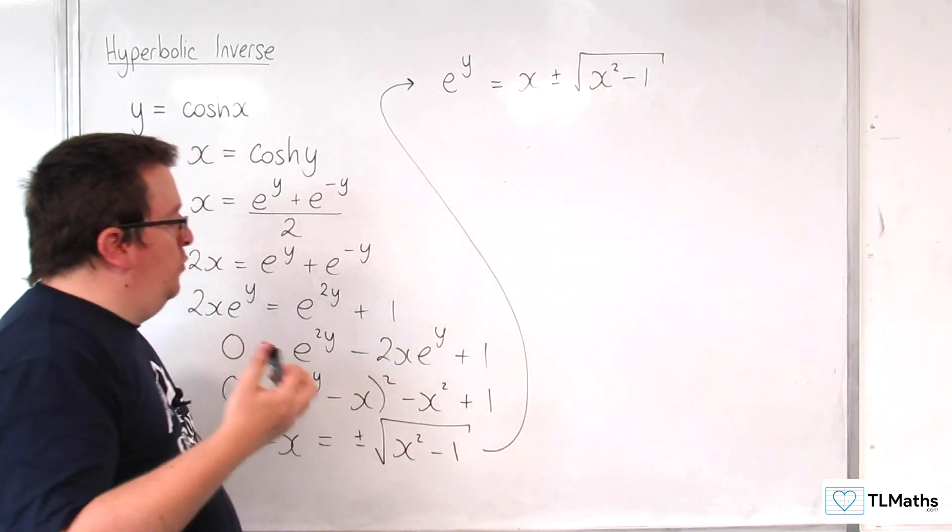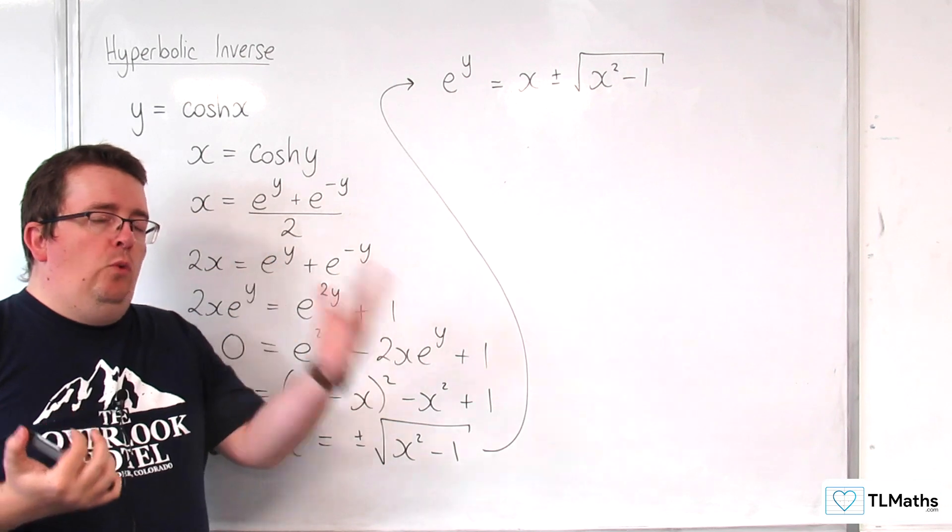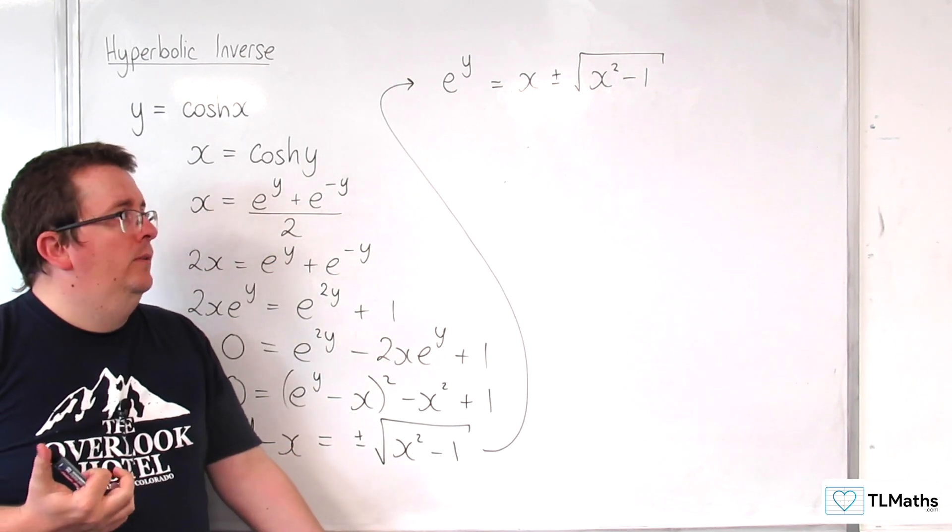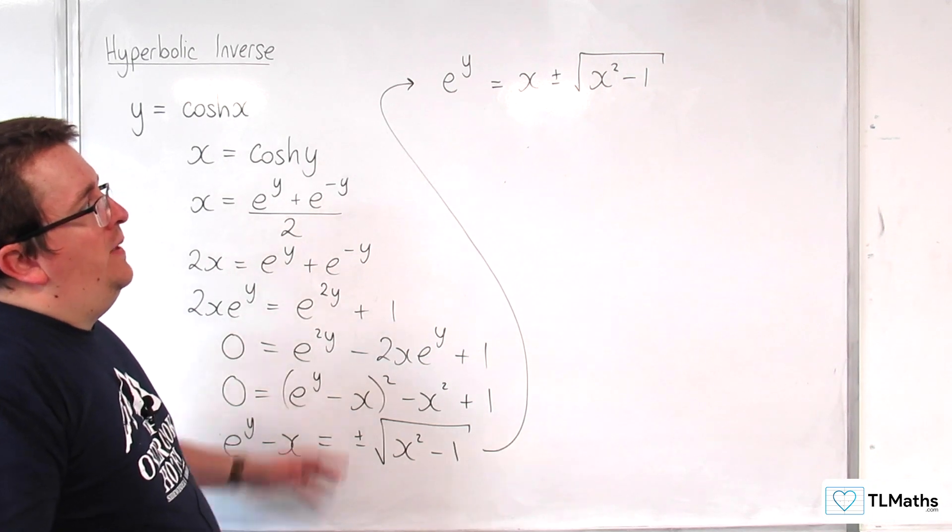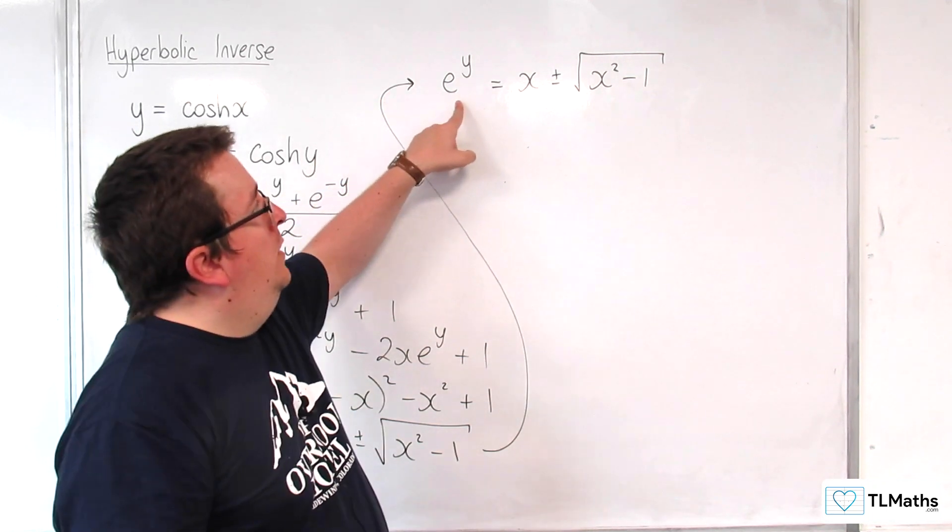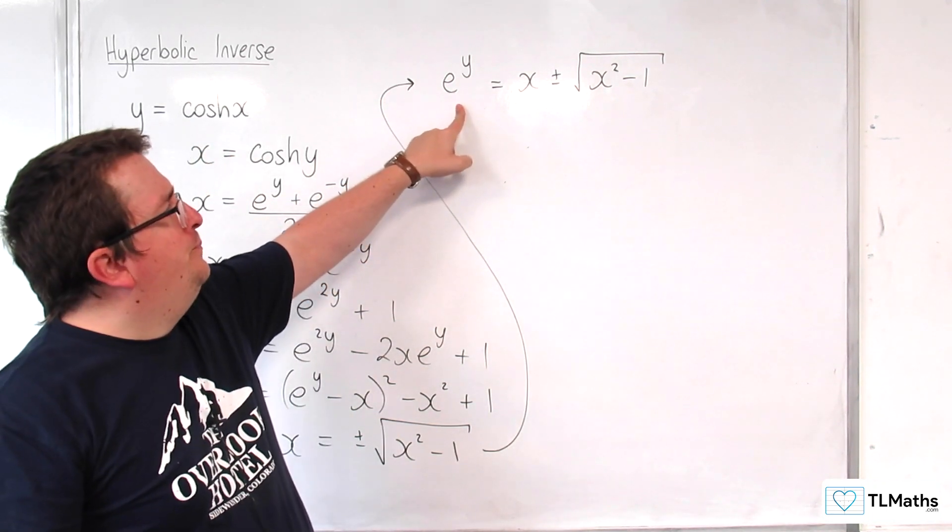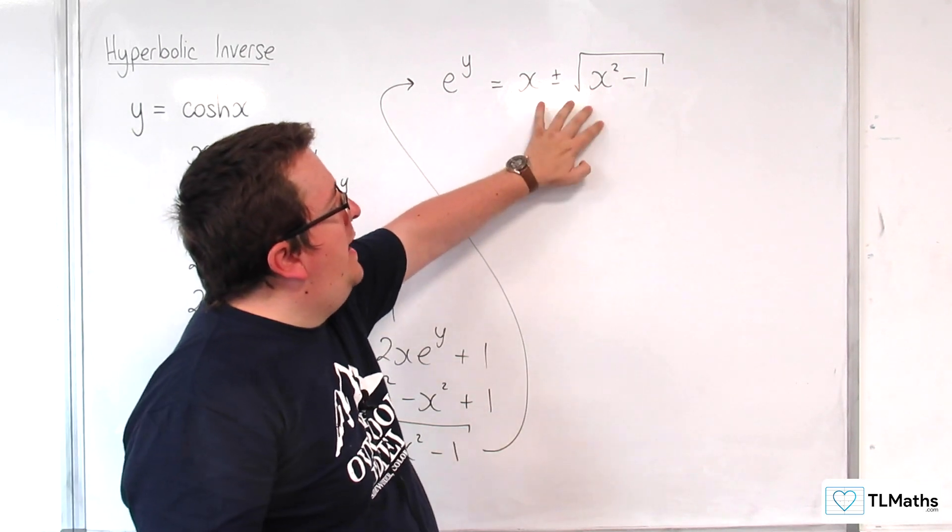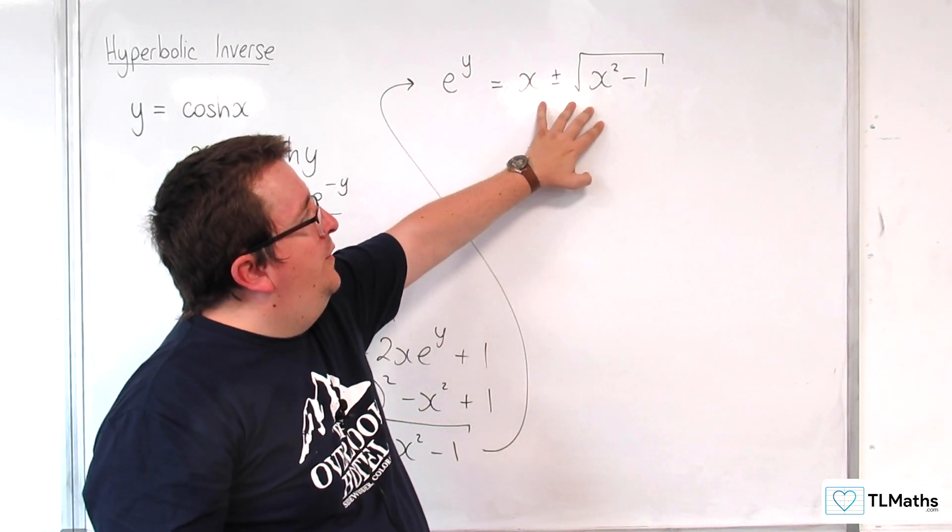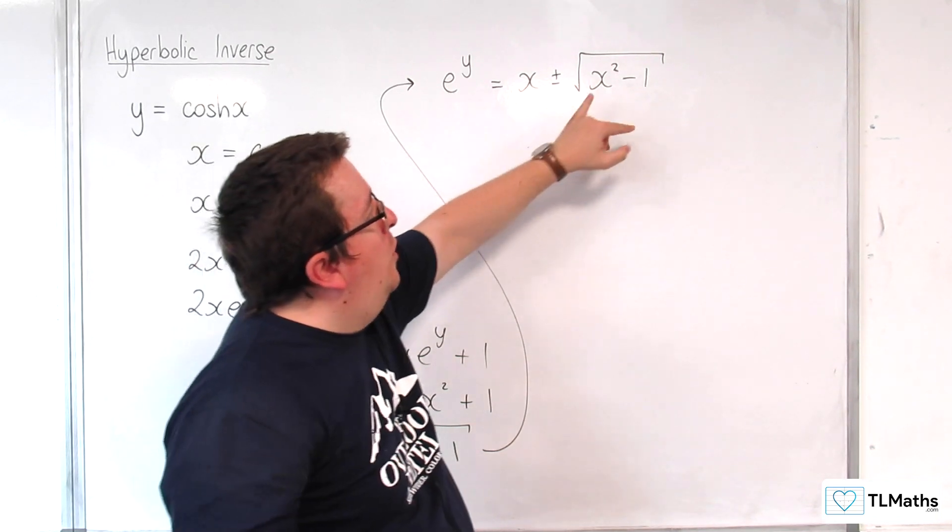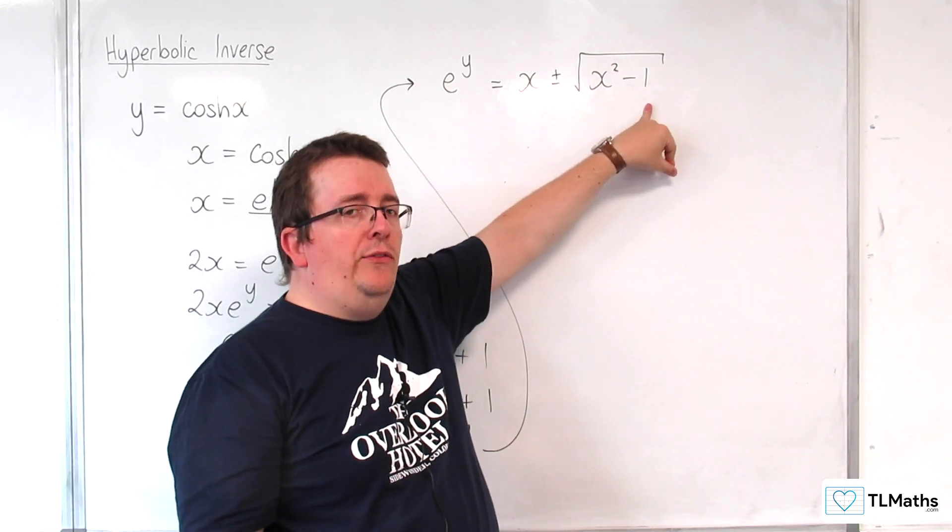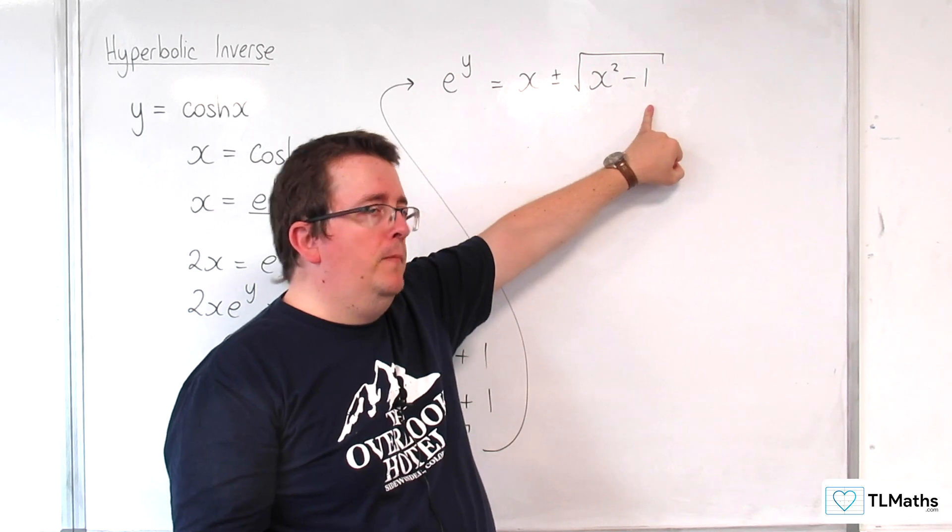Now, the argument that we had for y equals sinh of x, and finding its inverse, was that e to the y couldn't be negative. And what we had there was negative when we had the minus sign. But here we've got x squared, take away 1, inside the square root sign.